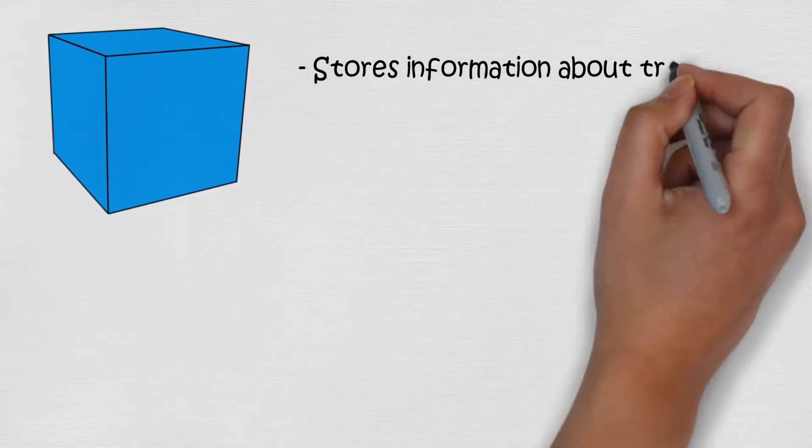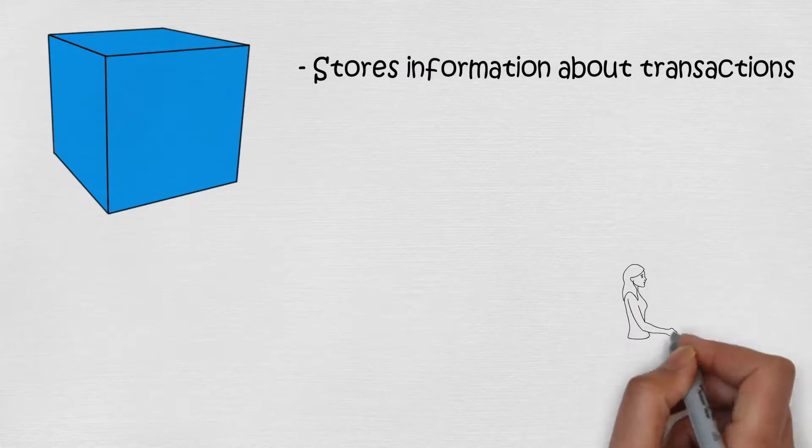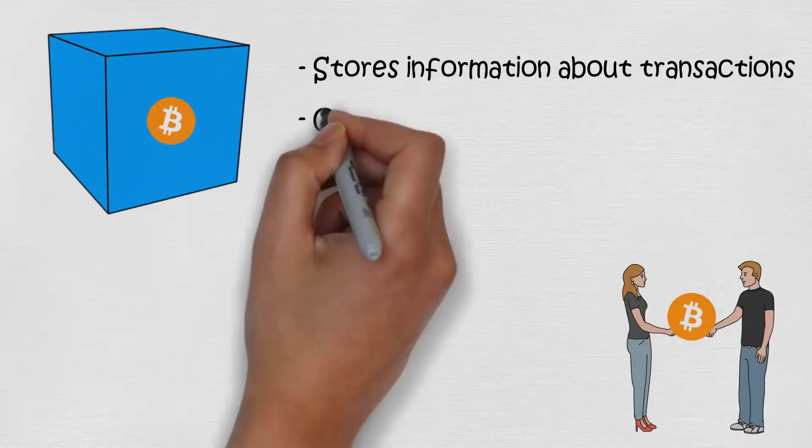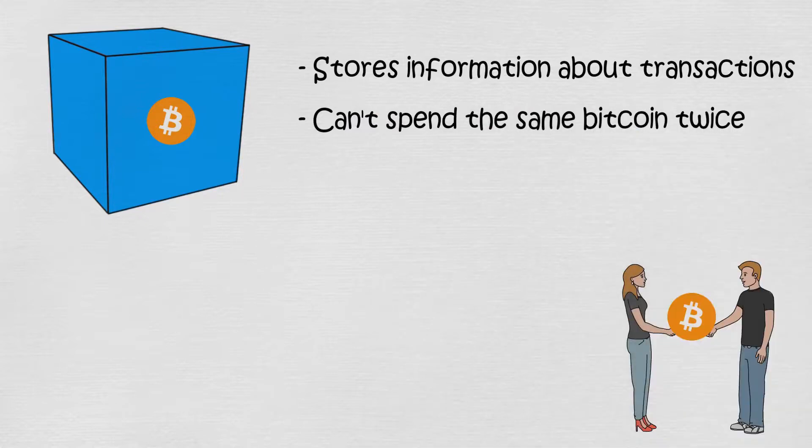Blocks store information about transactions. For example, every time you exchange Bitcoin, the transaction is stored in the block. This way you can't spend the same Bitcoin twice. When you spend it, it's gone.